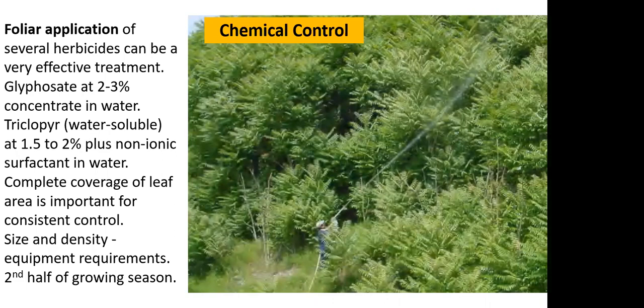With any foliar application on woody stems, it's very important to get complete leaf coverage to get consistent control. We do this during typically the second half of the growing season. The size and density of the areas we're trying to control has an impact on what kind of equipment we can use. For most of us with backpack or ATV sprayers, we're looking at controlling material that's less than head high. If you've got higher-pressure, larger-volume equipment, you may be able to control larger material.